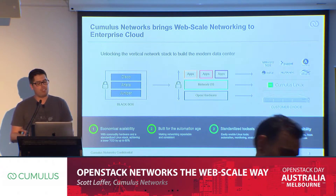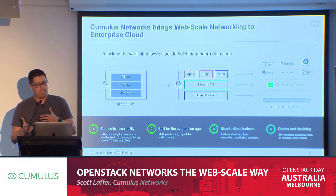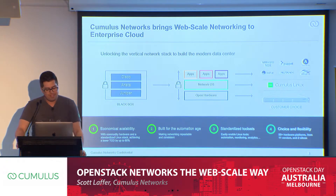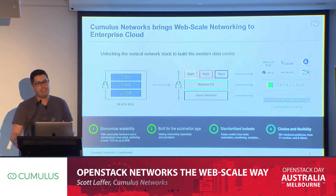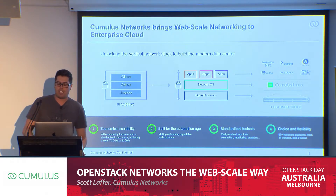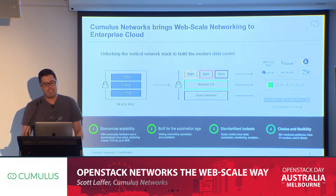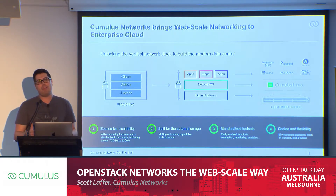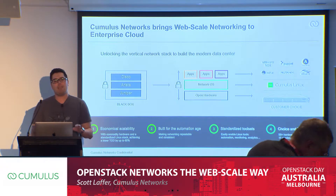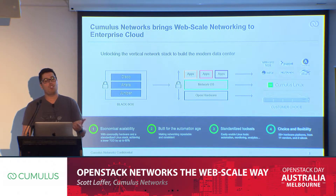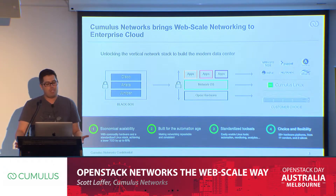Cumulus Networks came about from this history: the key differentiator in server technology used to be in the hardware. When you had a Sun server you had to run Solaris, when you had an IBM mainframe you had to run AIX, but when the x86 chip came around that dynamic changed incredibly. You can now have a dedicated software vendor and dedicated hardware vendor and pick the best of breed for what you need and what you want to spend. The same was not true of networking until recently.